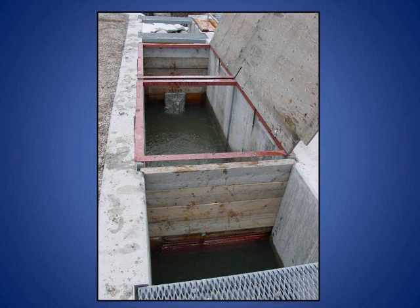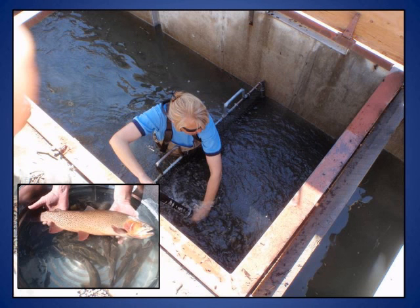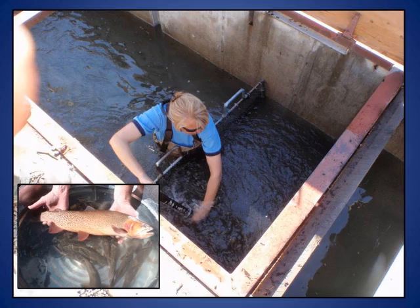The upstream edge of the trap is blocked by screens, visible in this photo at the water level. During the spawning run, the traps are checked daily. Fish are crowded up against the screen where they are netted. Workers identify each fish. Native Yellowstone cutthroat trout, like this one, are passed upstream to continue their spawning migration, while rainbow trout and hybrids are removed and stocked into nearby fishing ponds.